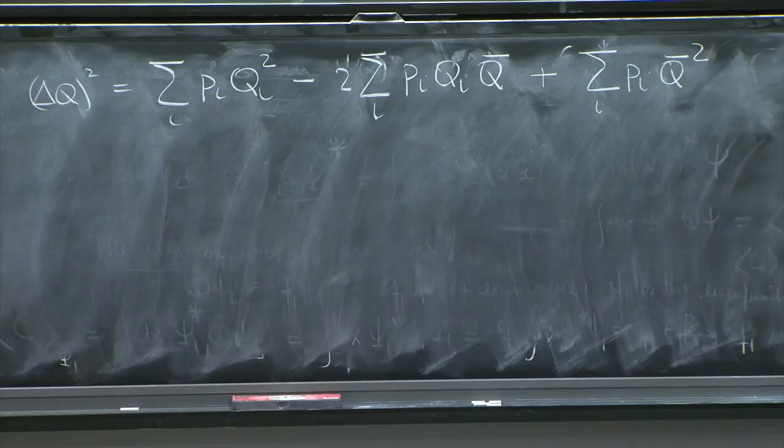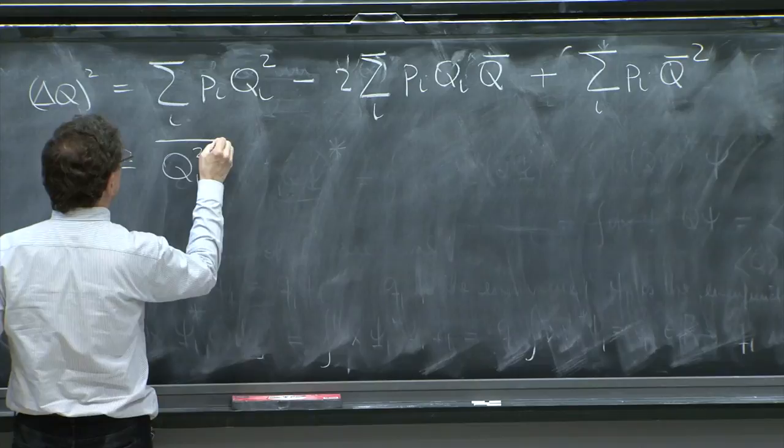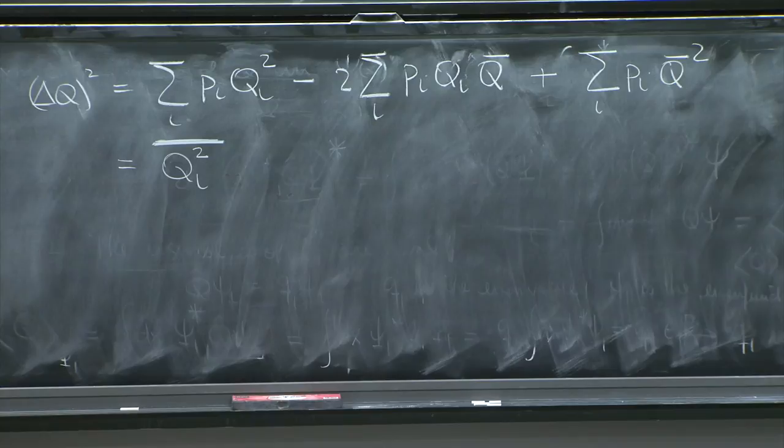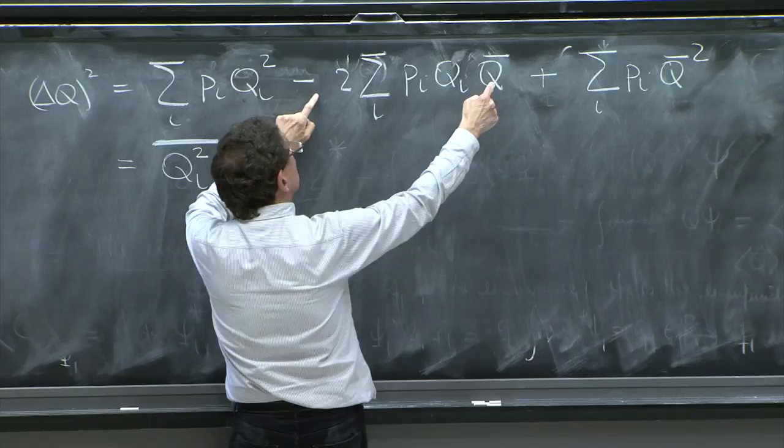This kind of thing shows up all the time. It shows up in quantum mechanics as well, as we'll see in a second. And you need to be able to see what's happening. Here you're having the expectation value of qi squared. That's the definition of the bar of some variable. You multiply the variable by its probability.